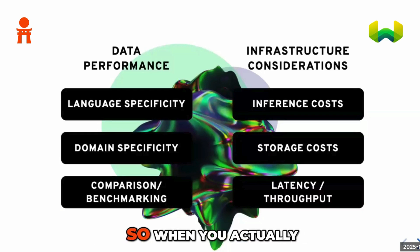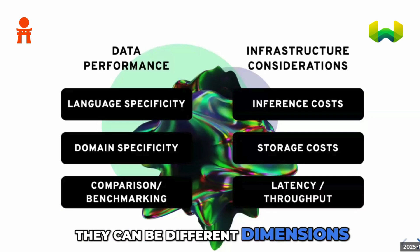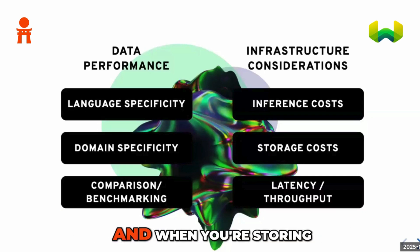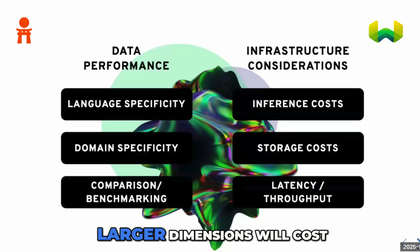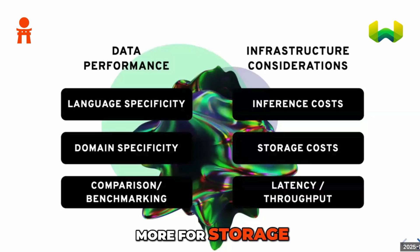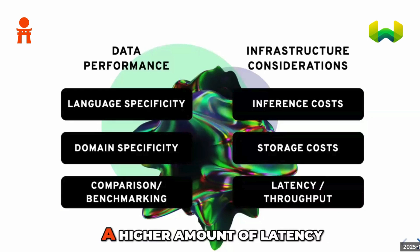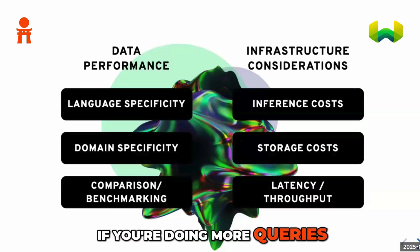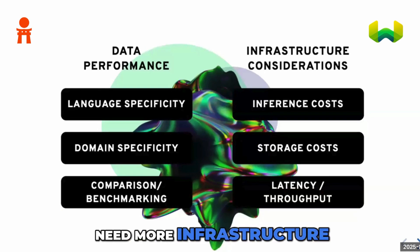Storage costs are another factor. When you actually create your vector embeddings, they can be different dimensions, and storing larger dimensions will cost more. The third infrastructure consideration is latency and throughput. If you need lower latency, are doing more queries, or need it to be faster, then you're going to need more infrastructure.